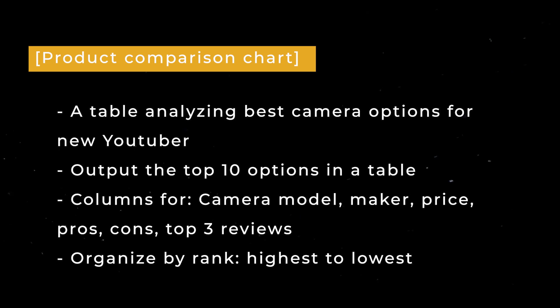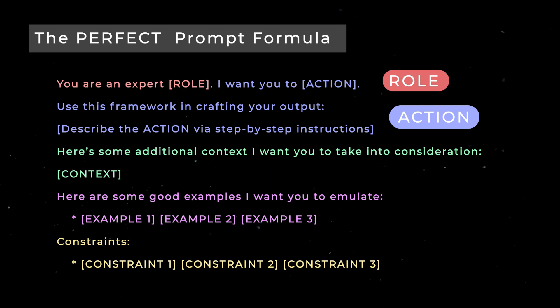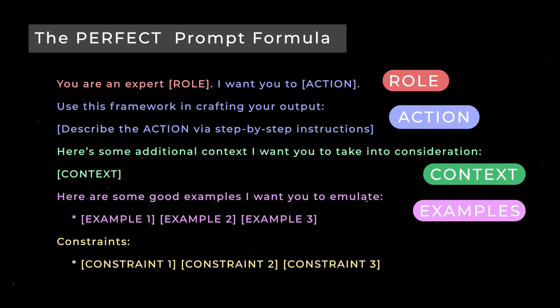Those are the five elements — now let's put it all together. The full prompt structure is: you are an expert role. I want you to action — use this framework in crafting your output, then describe the action via step-by-step instructions (only necessary for multi-step actions). Then: here's some additional context I want you to take into consideration — add your context. Here are some good examples I want you to emulate — list your examples. And finally, list your constraints and formatting instructions. That structure has all five elements built in.